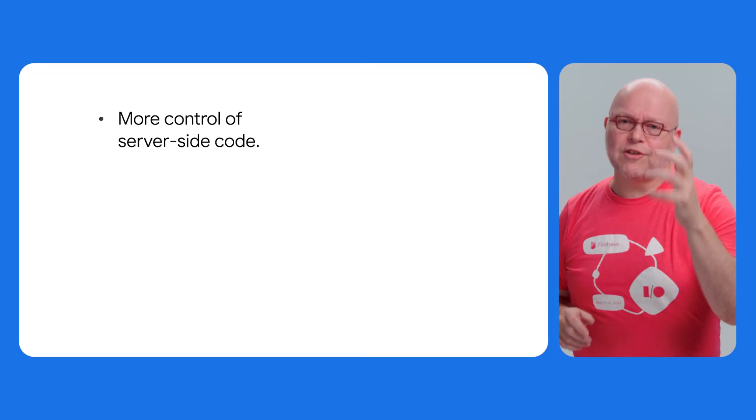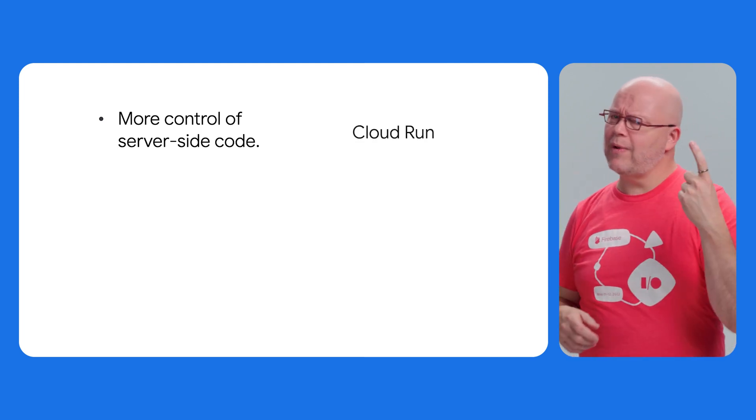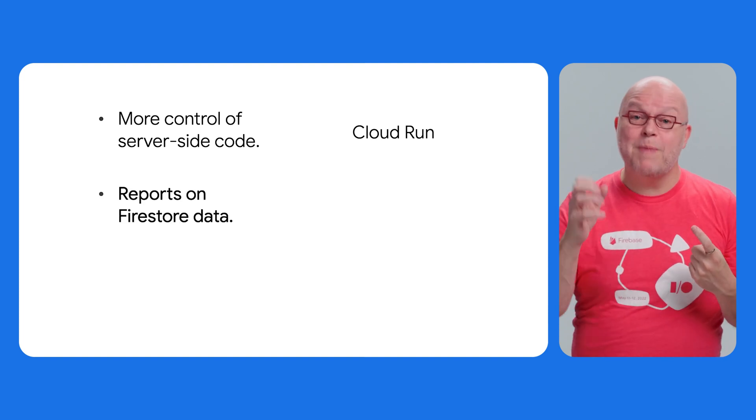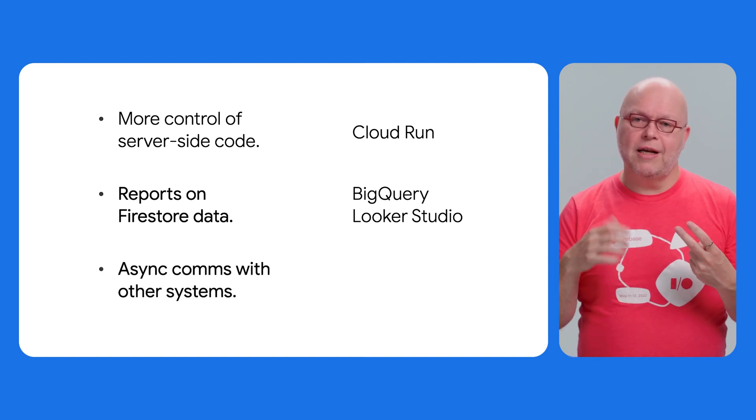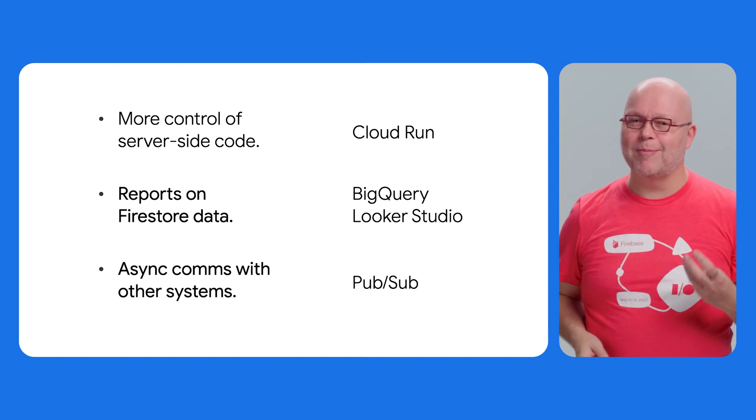We've covered a lot of ground here, Puff. Let's recap. First off, every Firebase project is a Google Cloud project — Firebase and Google Cloud are just two sides of the same coin. They work well together. Which Google Cloud features do you see developers use most often? They want more control of their server-side code, plus the advantages of container-based development — they get that with Cloud Run. Then they want reports and dashboards based on their Firestore data — they get that with BigQuery and Looker Studio. And they may want asynchronous communication with other systems, in Google Cloud or anywhere on the internet — and they get that with PubSub. Great recap. Thanks for joining me. Thanks for having me, Puff — this was fun. And thank you for watching. If you have any questions about today's topics, post them in the comments below. And if you want to learn more about Firebase, subscribe to this channel and give us a like while you're at it. See you next time.